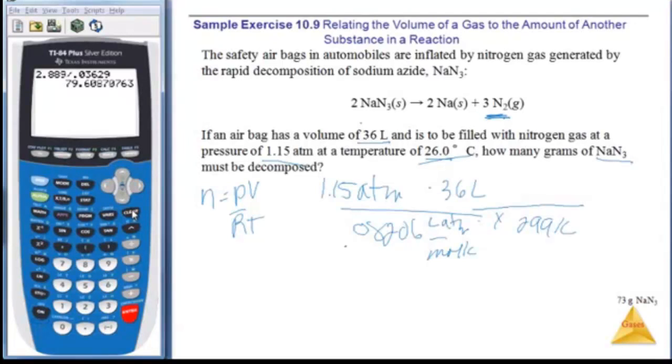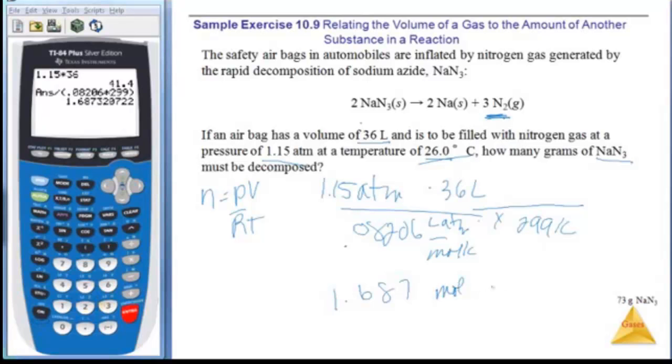So if I punch this, I'm going to get 1.15 times 36 equals, divide by 0.08206 times 299. Close my parentheses, and I get 1.687 moles of nitrogen.